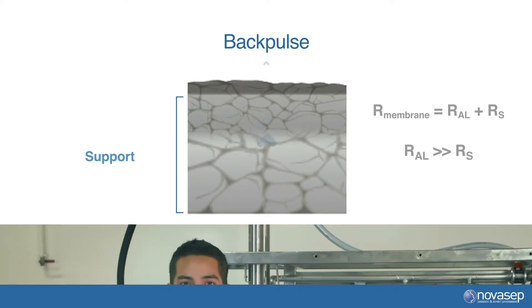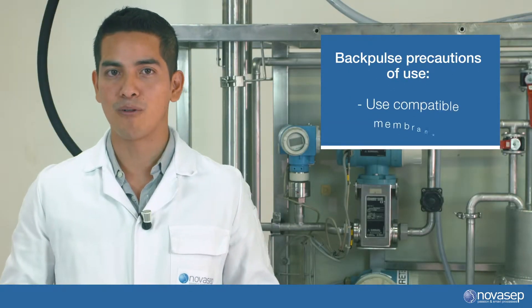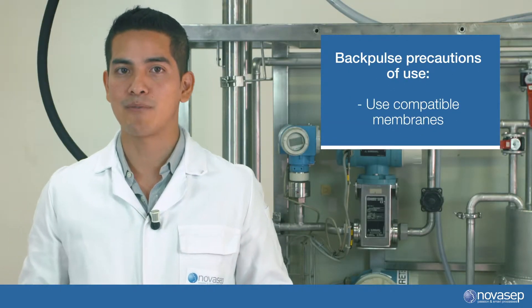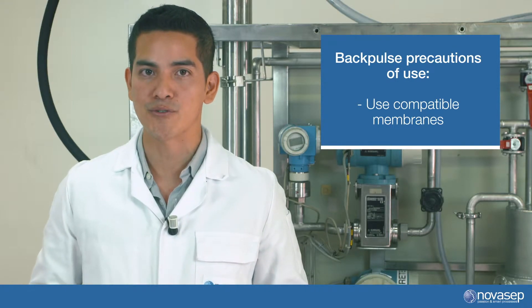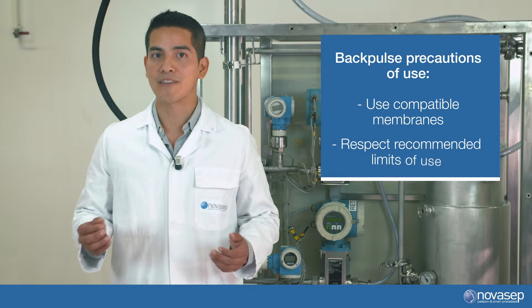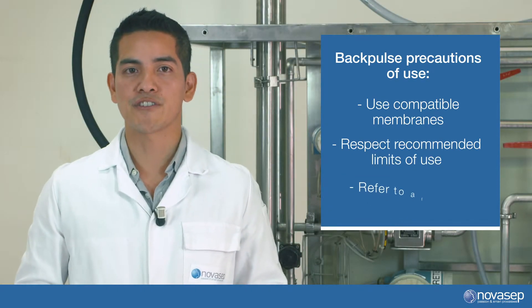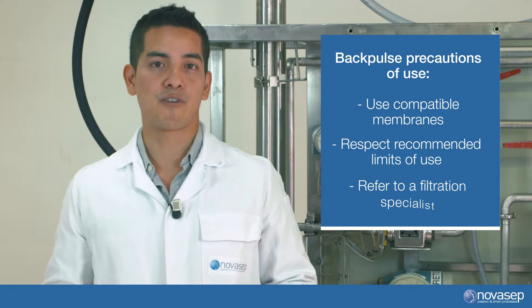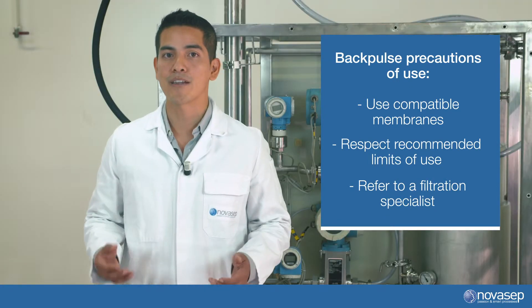If the back pulse is not used properly, you can lose the active layer altogether. One should take a few precautions when performing a back pulse: only perform a back pulse with compatible membranes that can resist the counter pressure used in the procedure; always perform a back pulse within the recommended limits of use; finally, discuss it with a filtration specialist before applying a back pulse — they will guide you in creating the correct protocol.